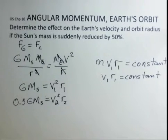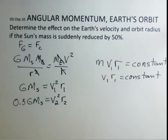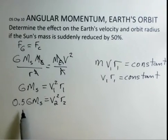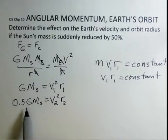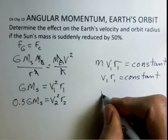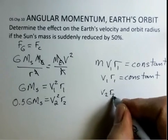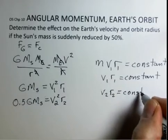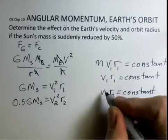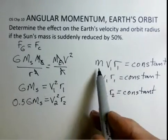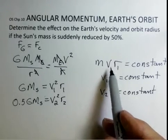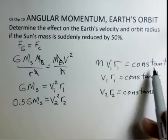So we have velocity times radius as a constant. And then, when we go out to the second condition, v2 and r2, what do you think we'll have for the multiplication of those two? And if we would go into the second situation where the Sun's mass has been reduced by 50%, then we would have v2, r2 equals the same constant. And again, I'm taking kind of a shortcut. It's mass of the Earth, velocity, radius, multiply together, give us a constant.